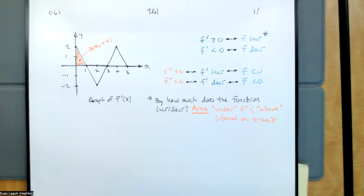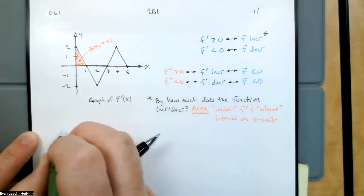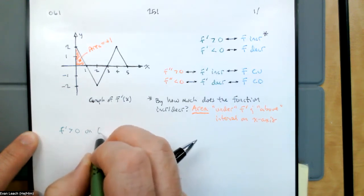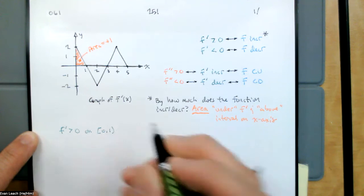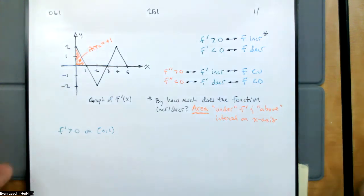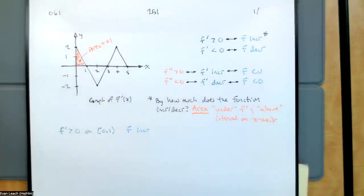So you look at the area under the graph and above the interval on the x-axis. Now we can refine our statement. We can say f prime is positive on the interval from 0 to 1, and so f increases on the interval from 0 to 1. But since the area on the interval from 0 to 1 is equal to one — which is the area of that triangle — we can say it increases by one.